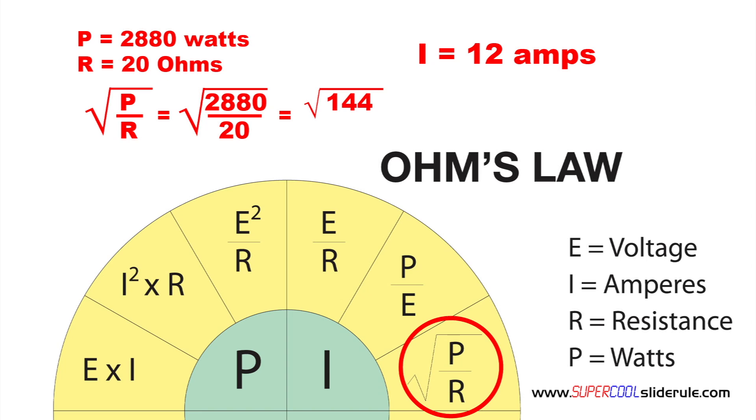If you do not have a calculator, the easiest way to calculate a square root is trial and error. Start with 10 times 10, which is 100. This is not large enough. We know the number must be larger than 10.